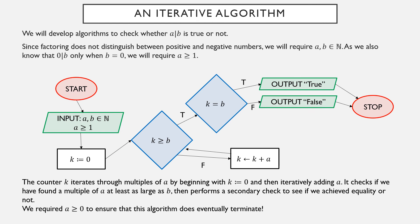We required a to be positive so that the algorithm terminates. If a equals 0, adding a would never change k, so the loop would run forever. You could fix that by first checking if a is zero and handling it separately, but we focus on the case when the factor a is positive.